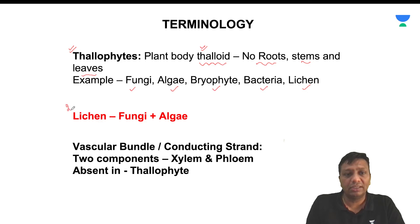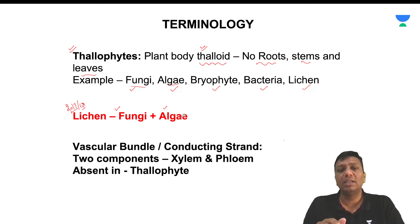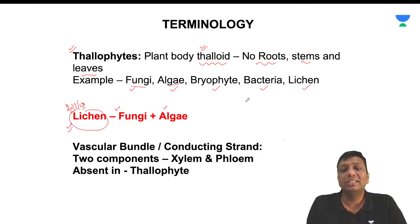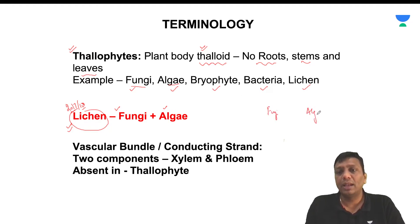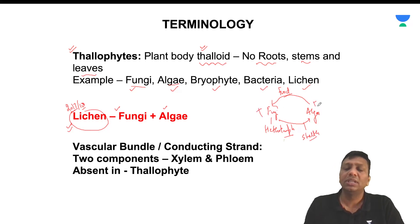Lichen was a UPSC question in 2017 and 2018. UPSC asked: lichen is an association of — and the answer was fungi and algae. Fungi and algae belong to two different groups of plants, both under thallophyta, but their association forms lichen. Lichens are ecologically very important. Fungi are heterotrophs — they cannot synthesize their own food. But algae are autotrophs. Algae provide food to the fungi, and fungi provide shelter to the algae. In this way, both survive together in a mutualistic association.